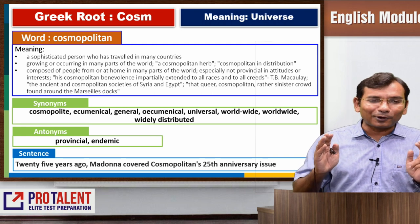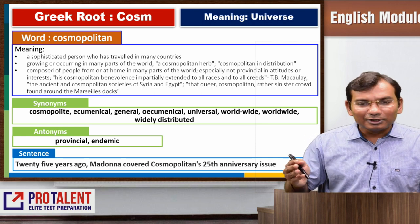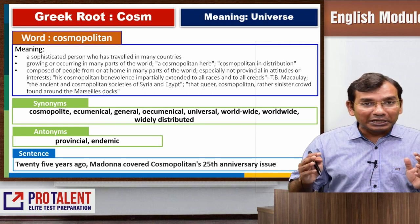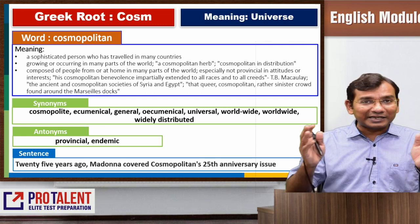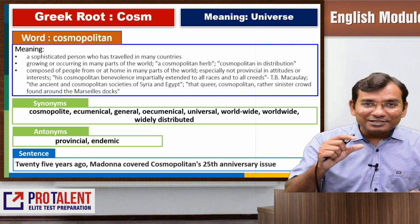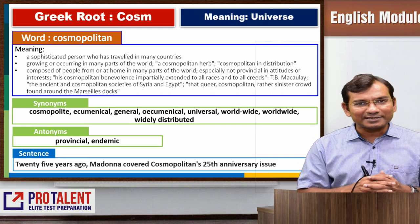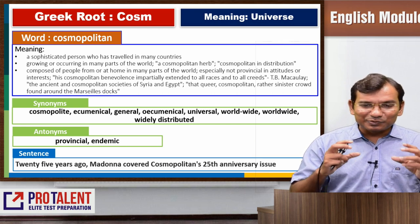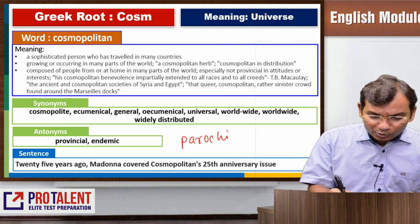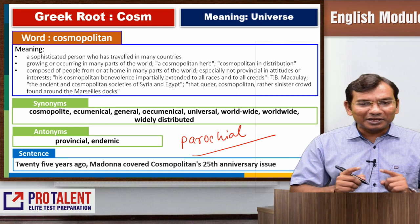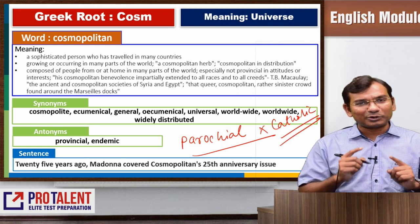The word cosmopolitan has many synonyms: cosmopolite, ecumenical, general, universal, worldwide, widely distributed, catholic — meaning broad. A cosmopolitan is a very sophisticated person who has travelled many countries. Cosmopolitan culture is a culture which respects different cultures — it is universal and broad-minded. The opposite would be provincial, endemic — within a particular region only. Parochial is a very good word for narrow-minded, while catholic and cosmopolitan are its direct opposites.